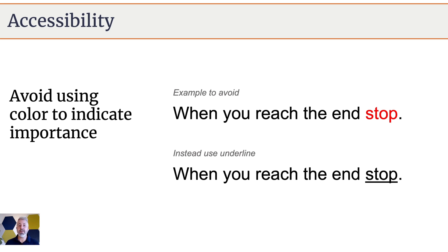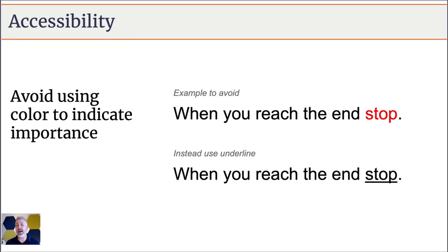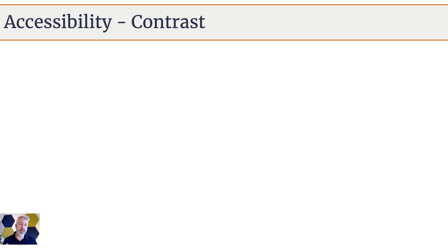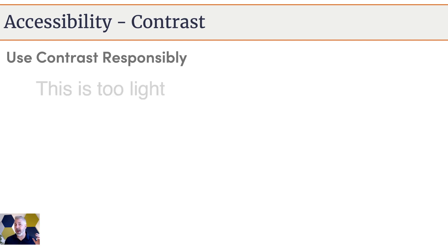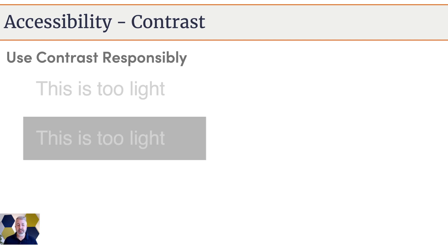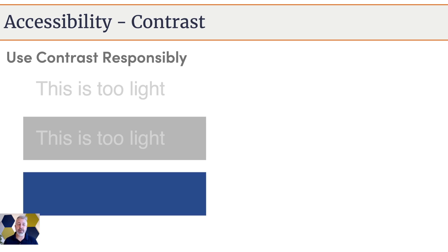What we can use instead is an underline under the word 'stop,' because it is not related to color — it's something that's more visually obvious to everyone who can read it. While thinking about accessibility, we also need to think about contrast. Contrast is the difference between two colors that are displayed together, and we want to use contrast responsibly. For example, light gray colored text on a white background blends in — this is low contrast and it's not as accessible. The same is true with a gray background and a lighter gray bit of text.